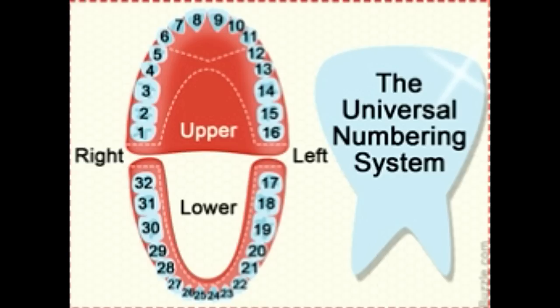The last 4 permanent teeth usually erupt by the age of 25. Both the maxillary upper jaw and mandibular lower jaw arches contain similar types of teeth. There are 4 types of teeth present in the upper as well as lower jaw. These are called incisors, canines, premolars, and molars. In dentistry, permanent and deciduous teeth are identified with the help of numbering systems.